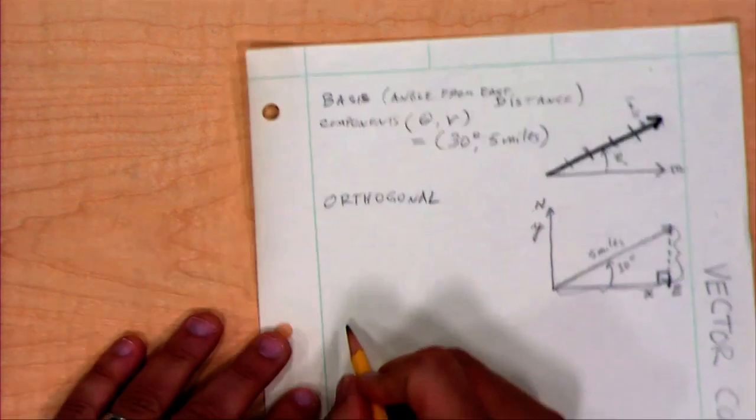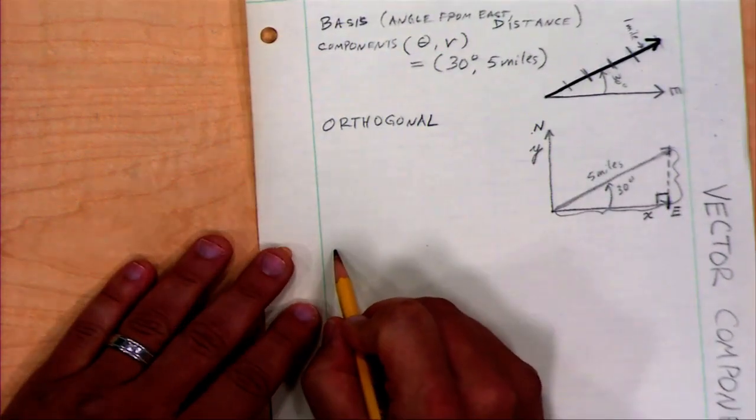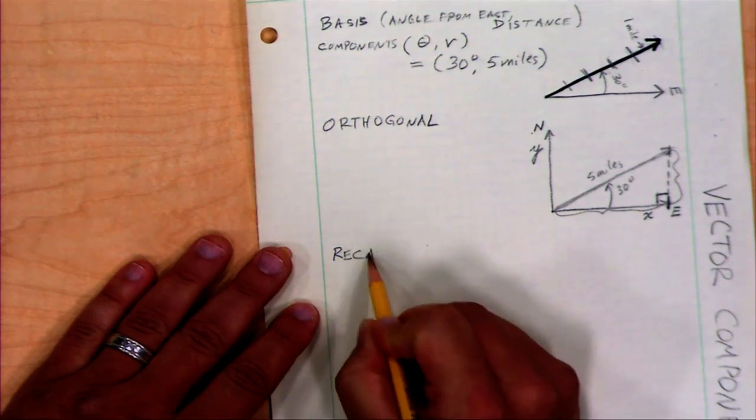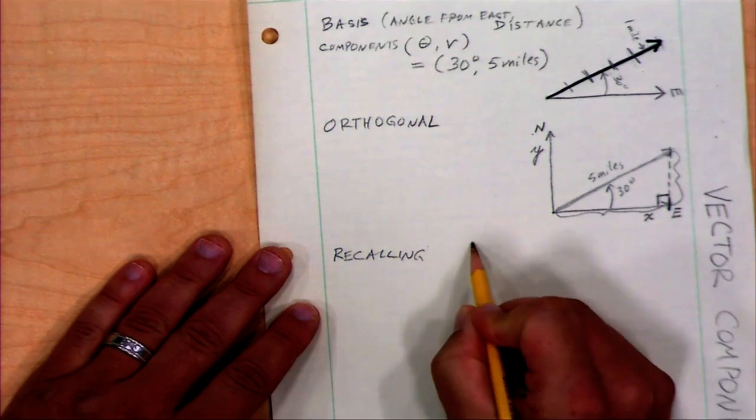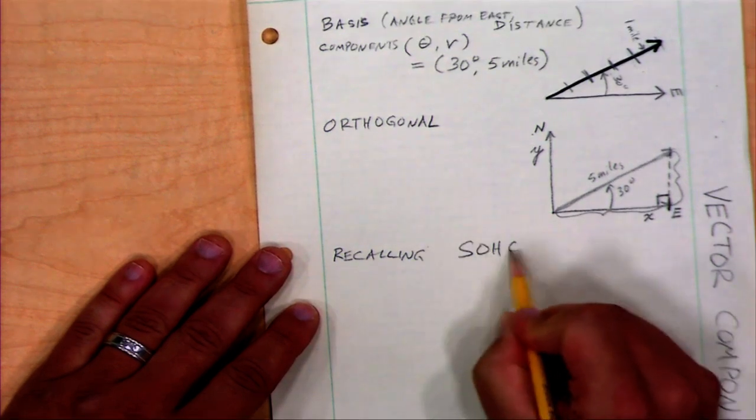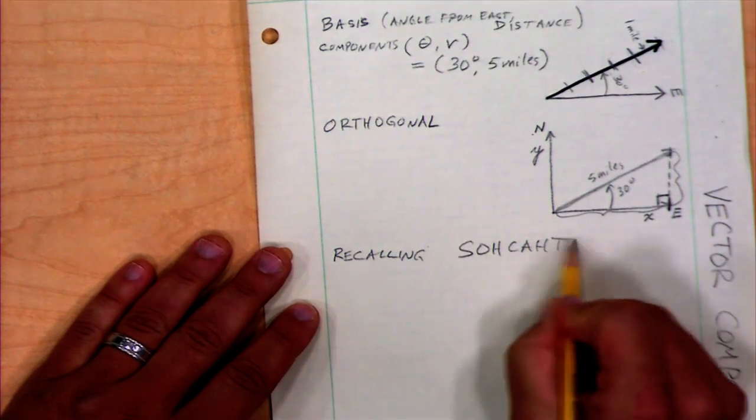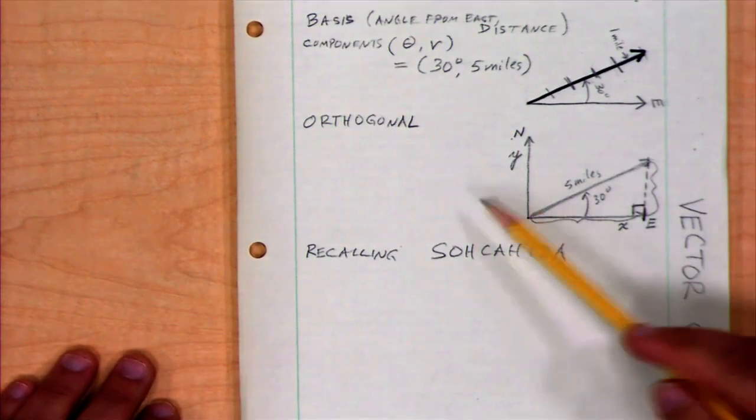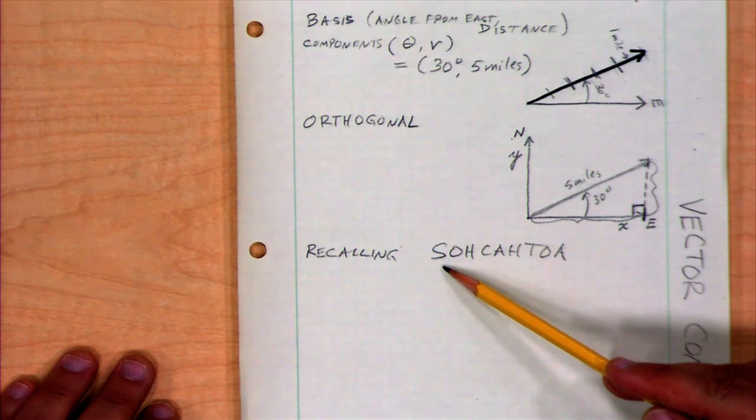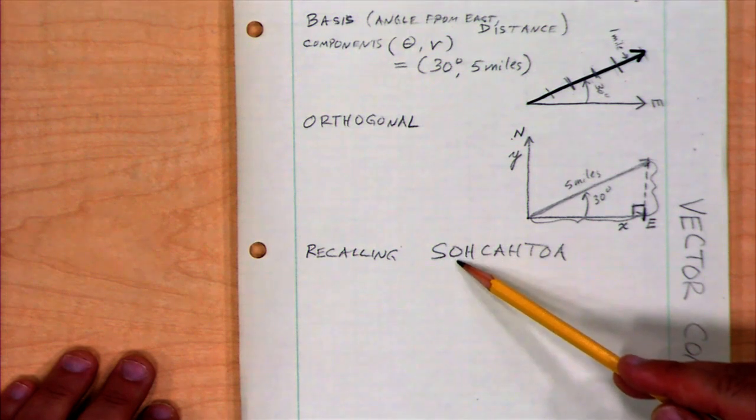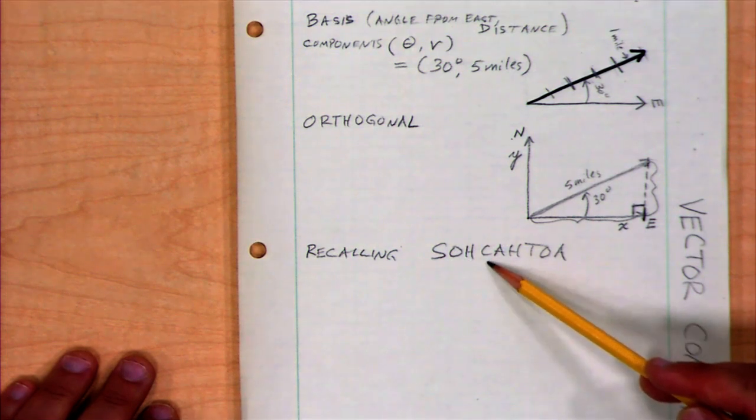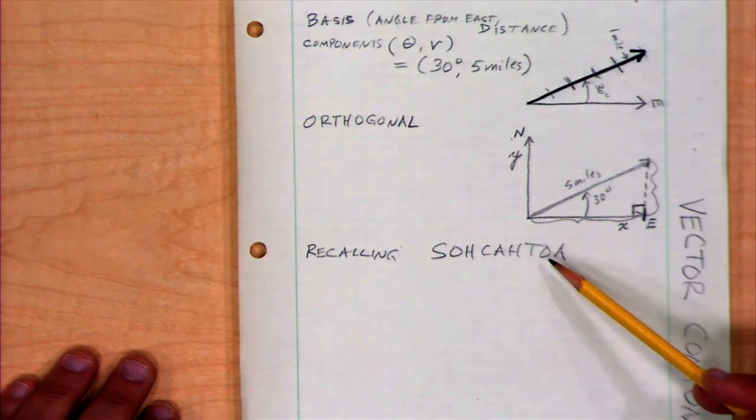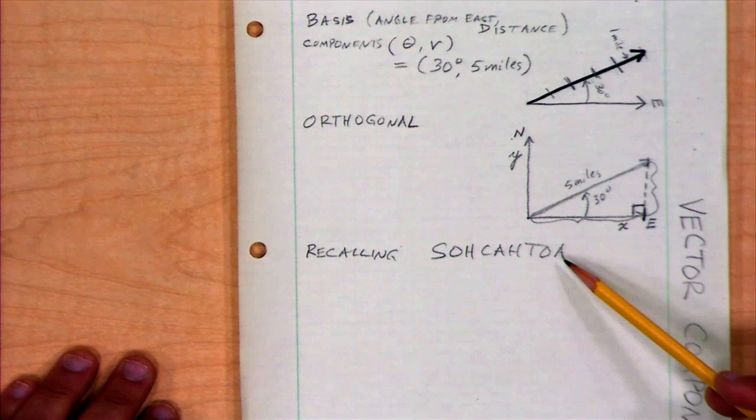If you remember our trigonometric identities, what was the mnemonic that people are often using? Recalling, SOH-CAH-TOA. Hopefully, you've seen that in a trigonometry class. The sine of an angle is the ratio between the opposite side and the hypotenuse. The cosine is the adjacent side and the hypotenuse. And the tangent of the angle is the ratio between the opposite side and the adjacent side.